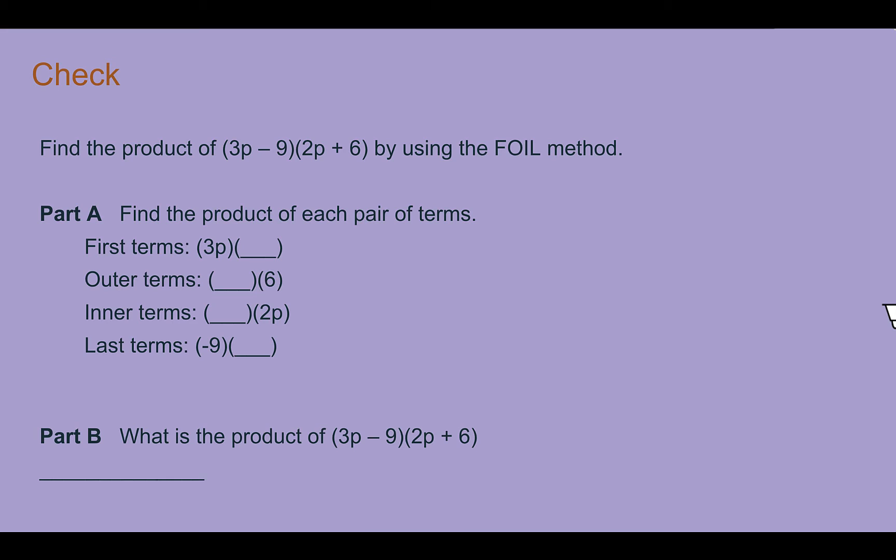Check your understanding. Find the product of 3p minus 9 and 2p plus 6 by using the FOIL method. Pause the video now and complete the check.